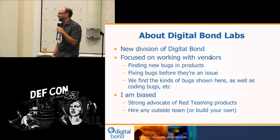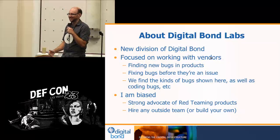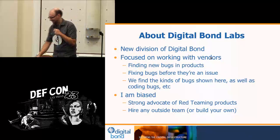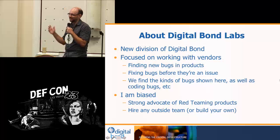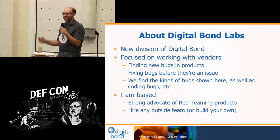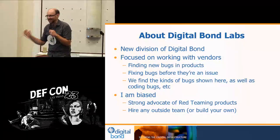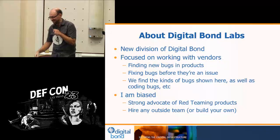About our company: we're a new division of Digital Bond. Digital Bond is a small consulting company that's been doing industrial control system and SCADA security consulting since about 2001. Our little part of Digital Bond is focused on working with vendors and some end users trying to find new vulnerabilities in industrial control systems so that we can mitigate those vulnerabilities. I'm really biased because I do that for a profession — I'm a big advocate of red teaming products.